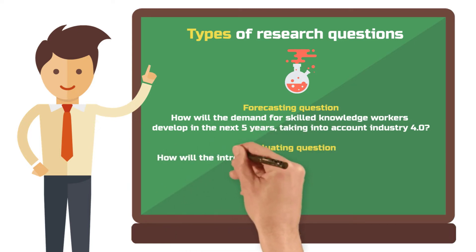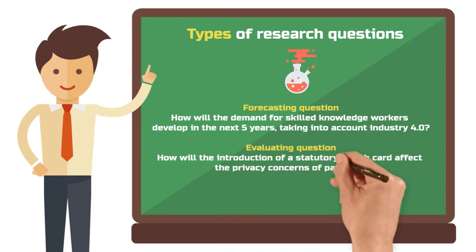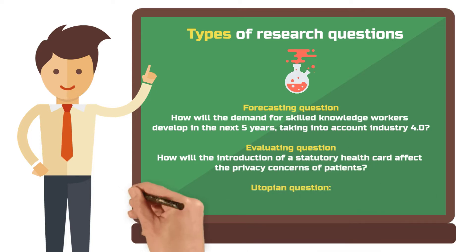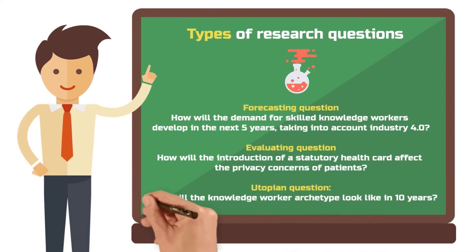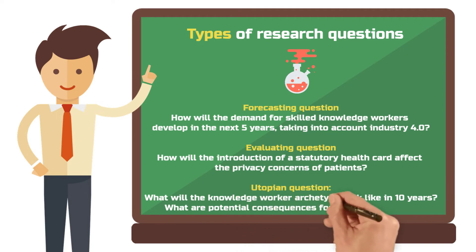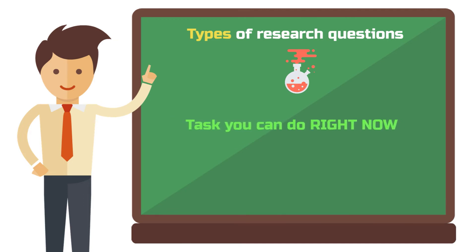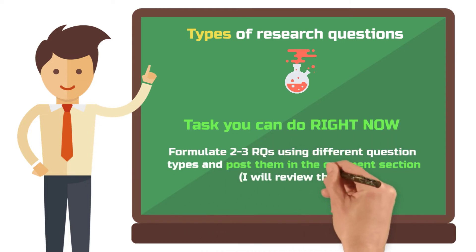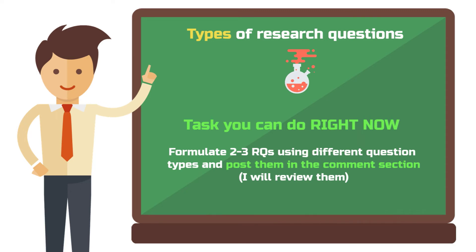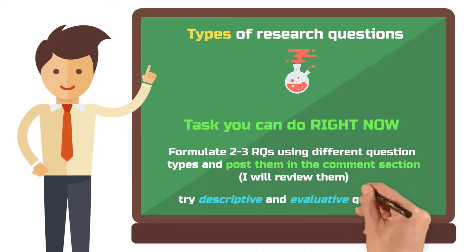An evaluating question: how will the introduction of a statutory health card affect the privacy concerns of patients? And then there is a rather exotic type of question — the utopian question: what will the knowledge worker archetype look like in 10 years, and what are potential consequences for corporate culture? My tip is to formulate two to three different research questions for your topic using different question types, and send these to your supervisor. My experience is that the most common question types for undergraduate research are evaluative or descriptive.